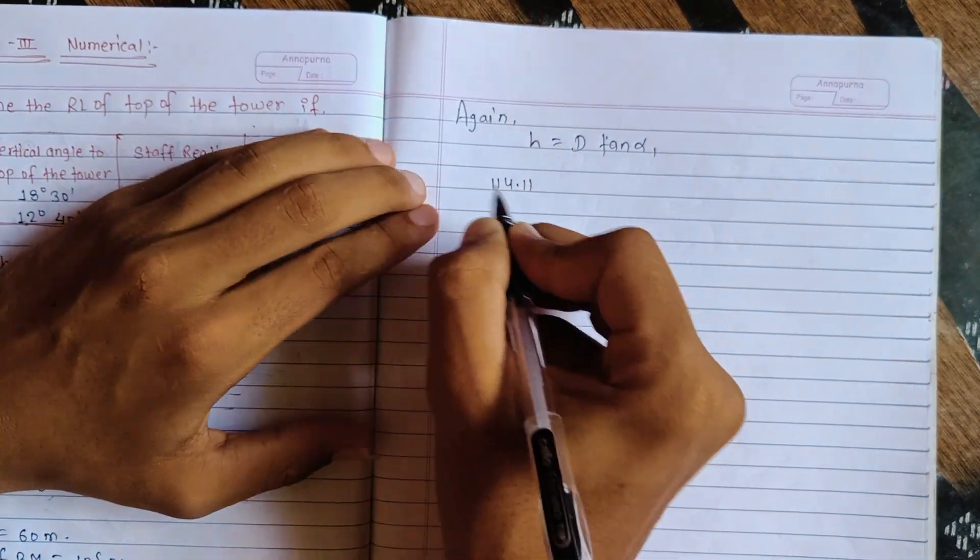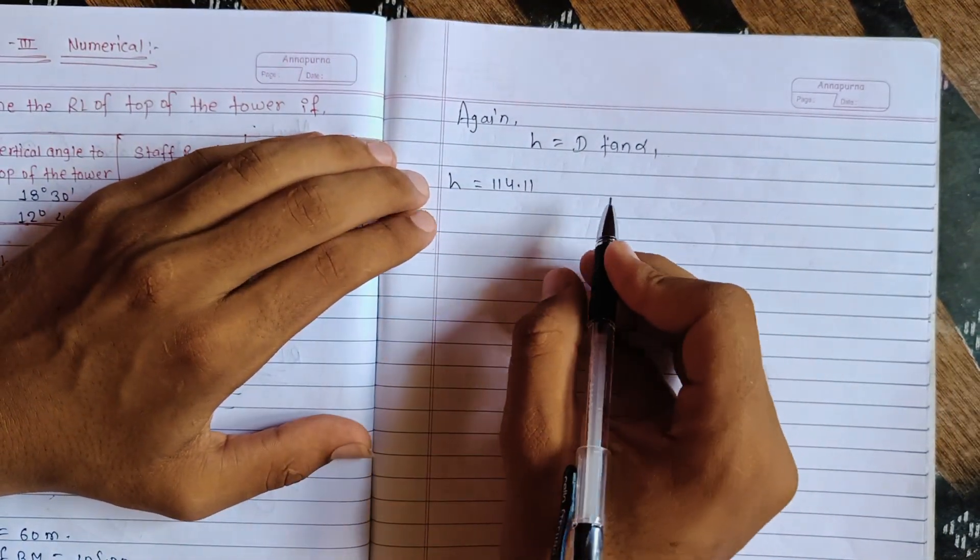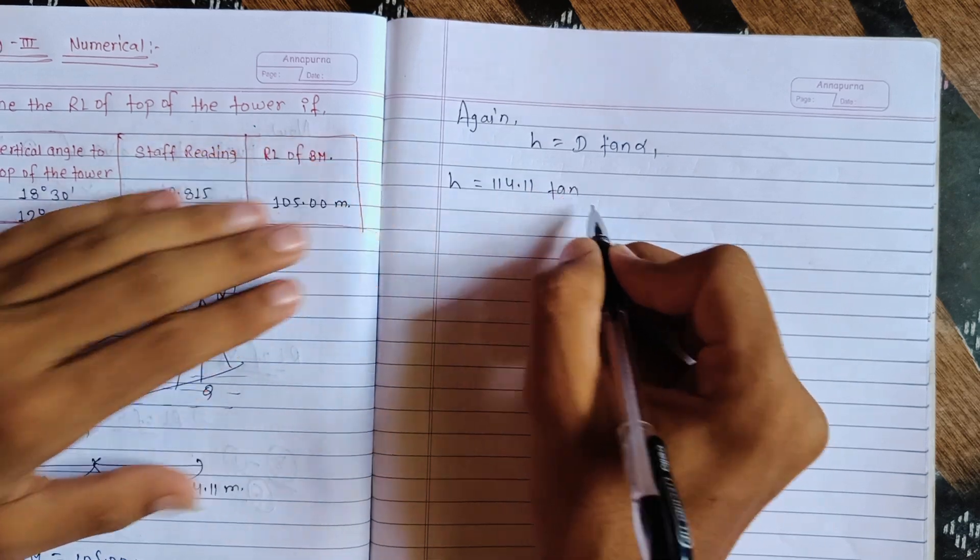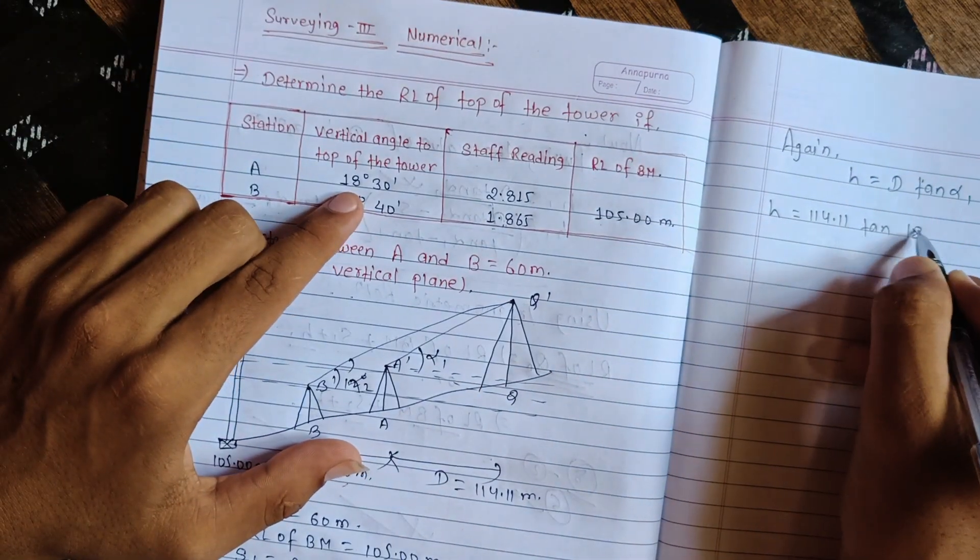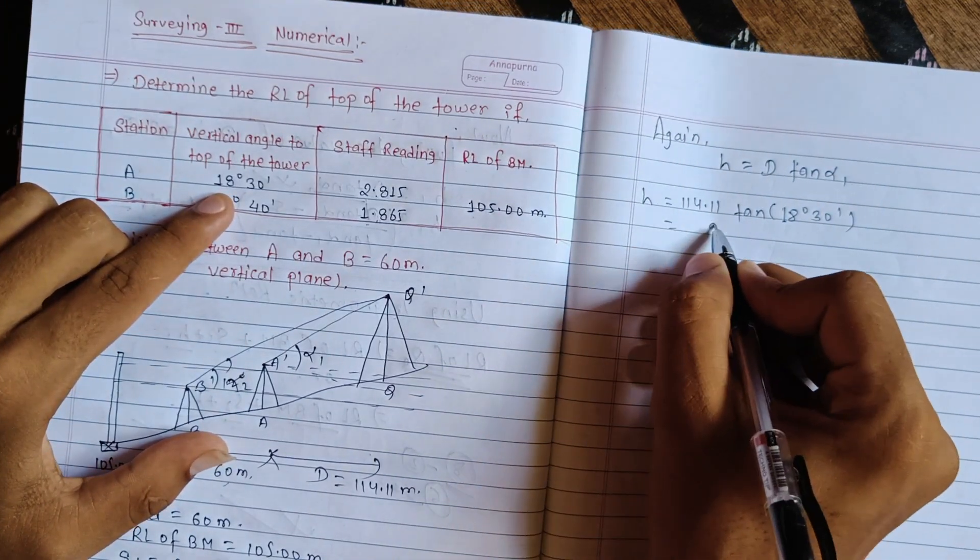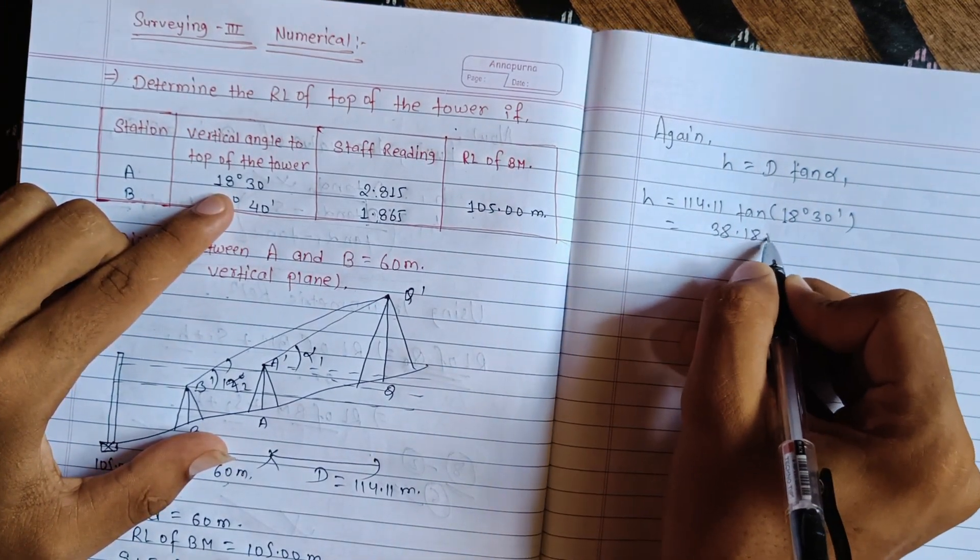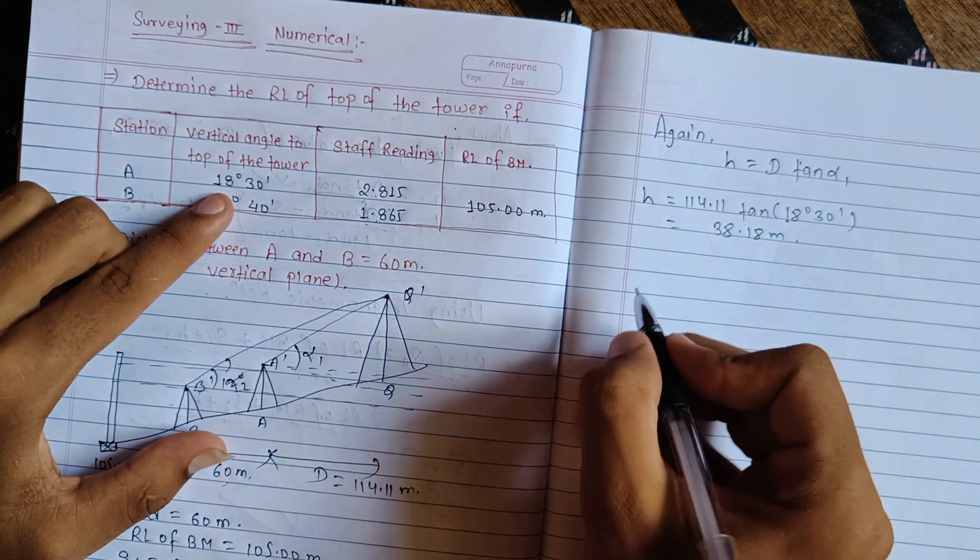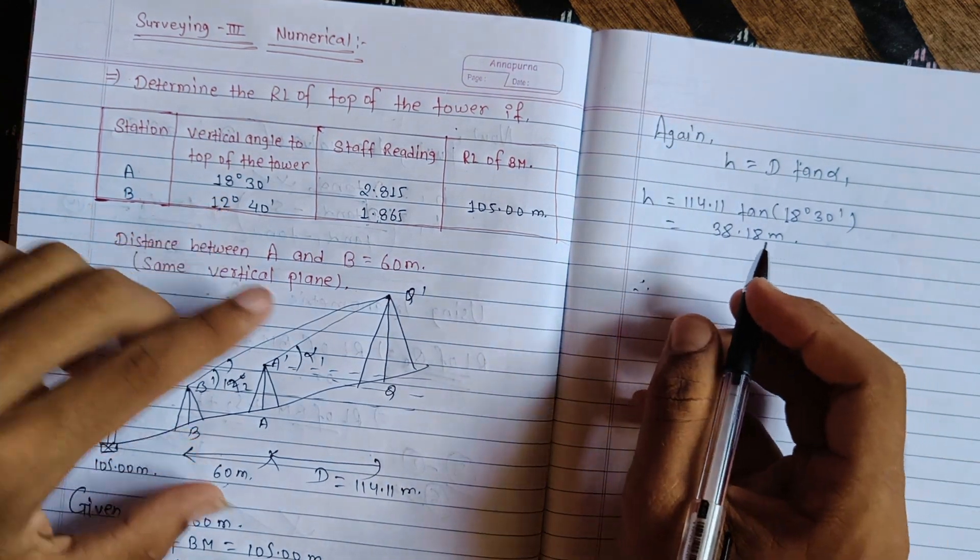From formula, tan(alpha1), Alpha1 is 18 degrees 30 minutes. The value is 38.18 meters.